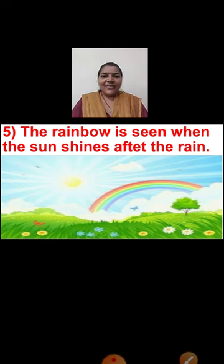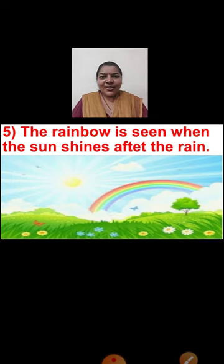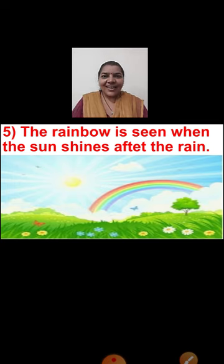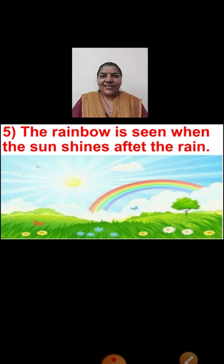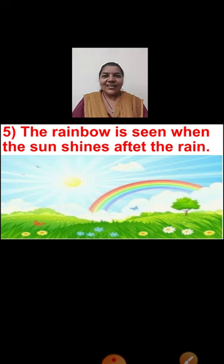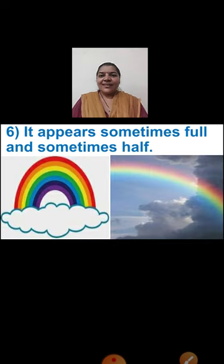If you see the rainbow children, the order of the colors starts with violet. The first color is violet, then indigo, then comes blue, then green, then yellow, then orange, and the last on top we can see red color. So this is the order of the rainbow colors. Do you know when we can see the rainbow in the sky? The rainbow is seen when the sun shines after the rain.